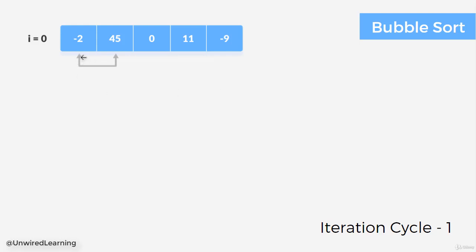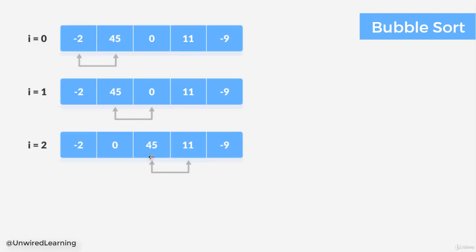So here we compare index 0 with index 1. If index 0 is greater than index 1 we swap, but currently index 0 is less than index 1. Now we are going to compare index 1 with index 2. And if you see here 45 is greater than 0, then we need to swap. That means we are going to change their position in this array. Now here you can see the new position of 45.